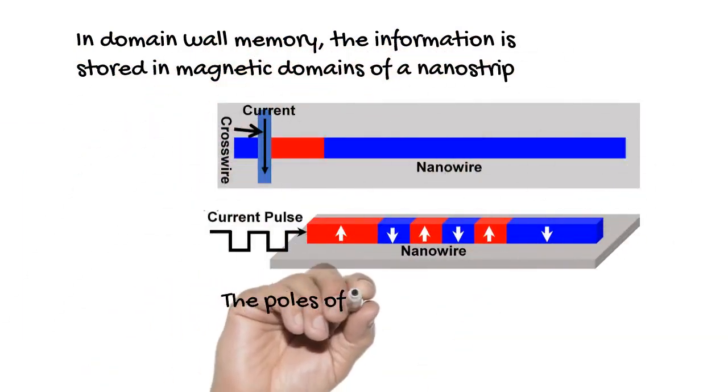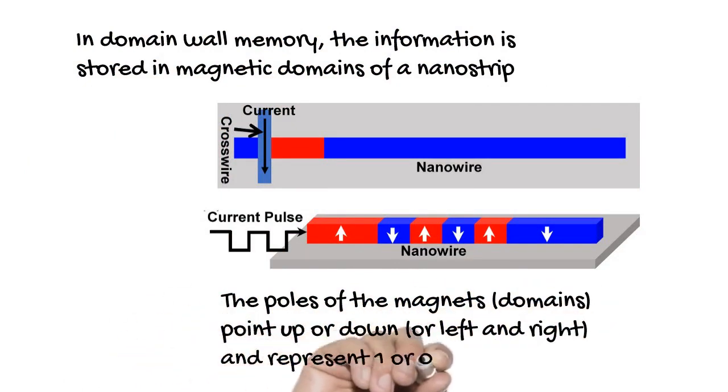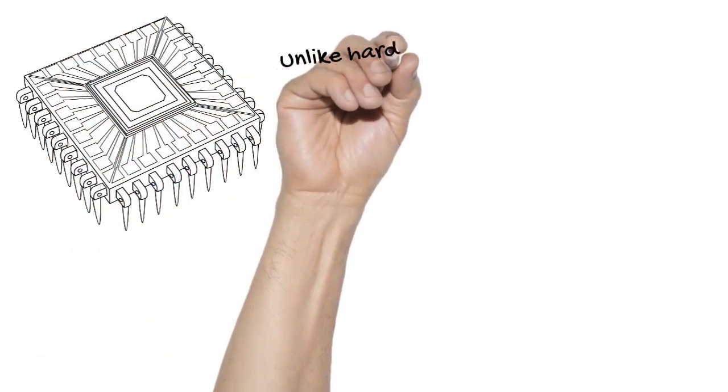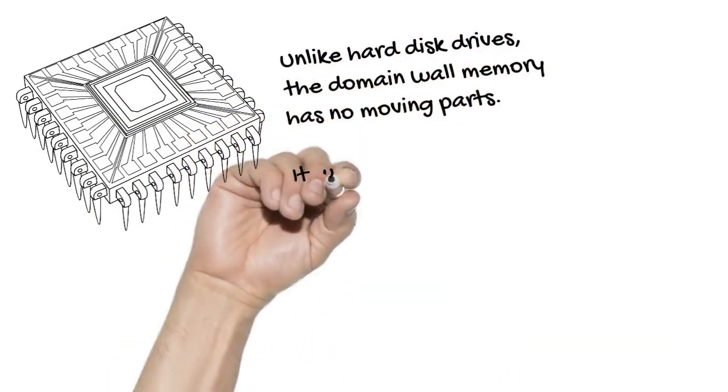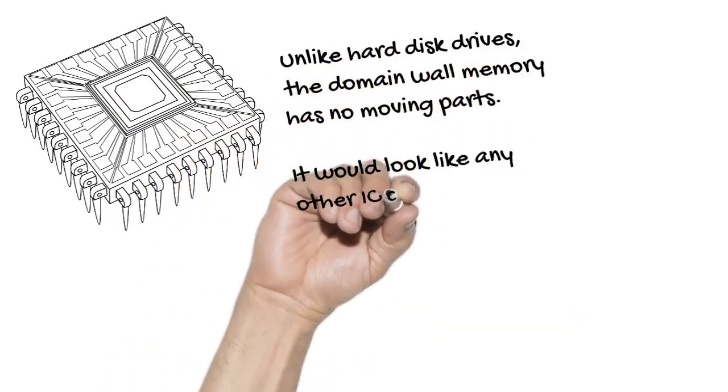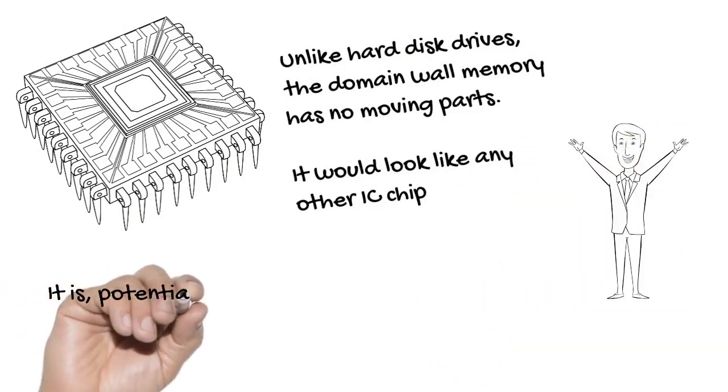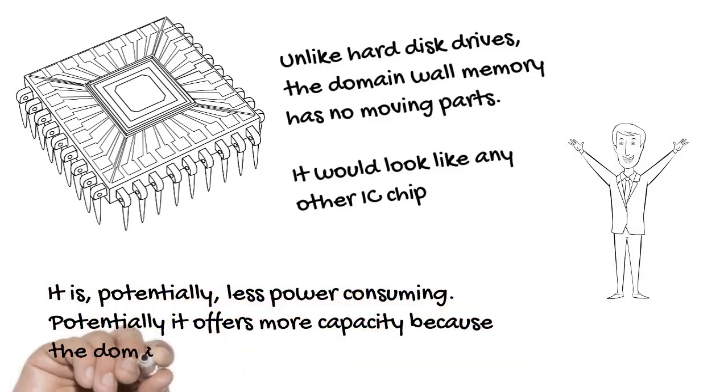The poles of the magnetic point up or down or left and right and represent 1 or 0. Unlike hard disk drives, domain wall memory has no moving parts. It would look like any regular IC chip. It is potentially less power consuming and offers more capacity because the domain can be arranged in three dimensions.